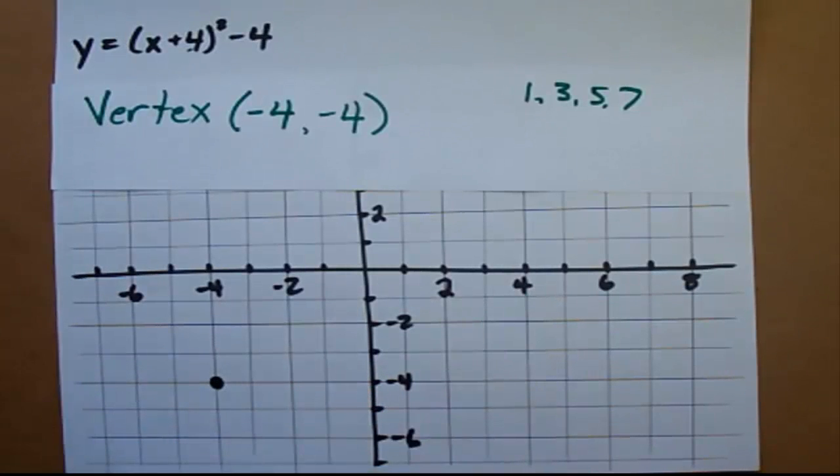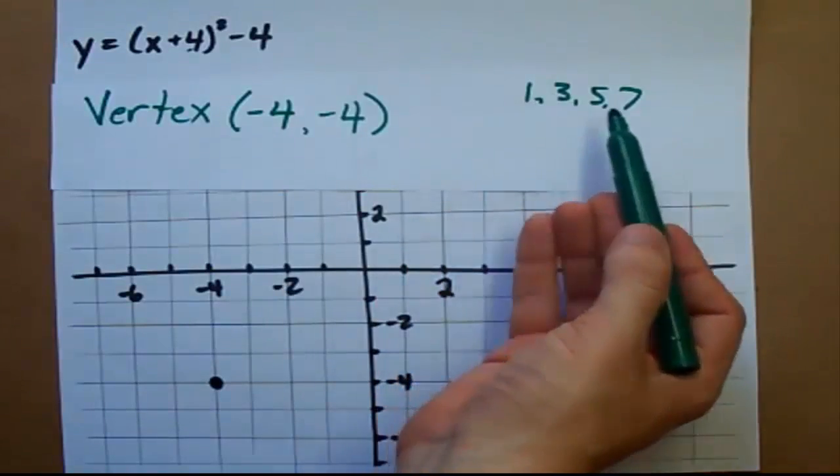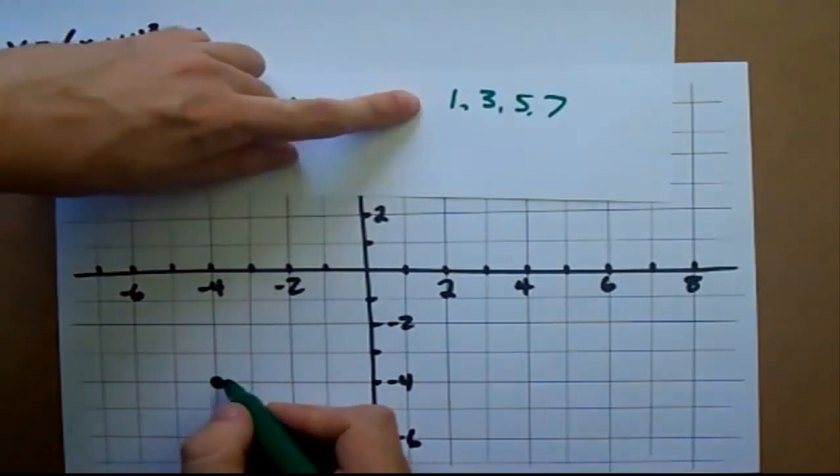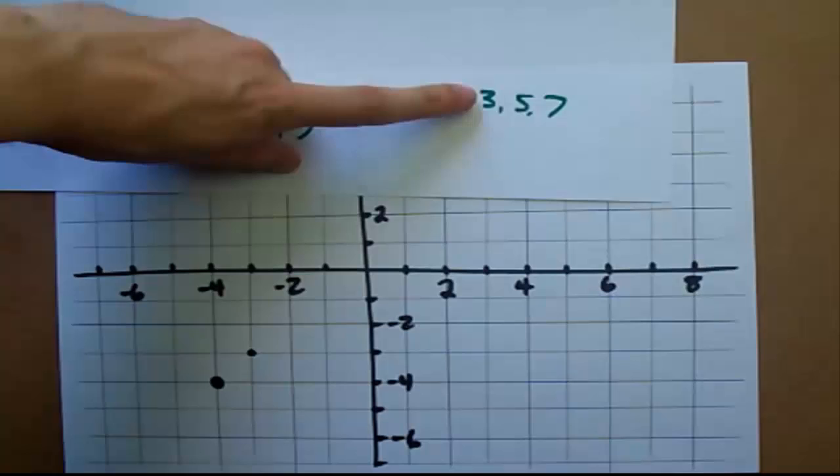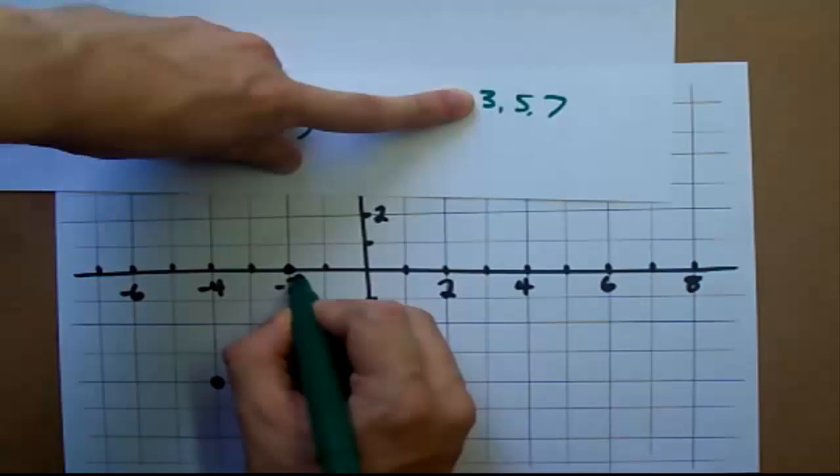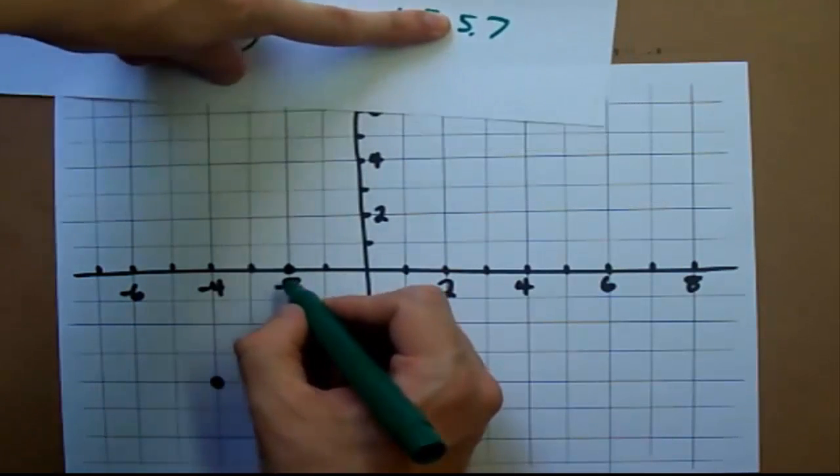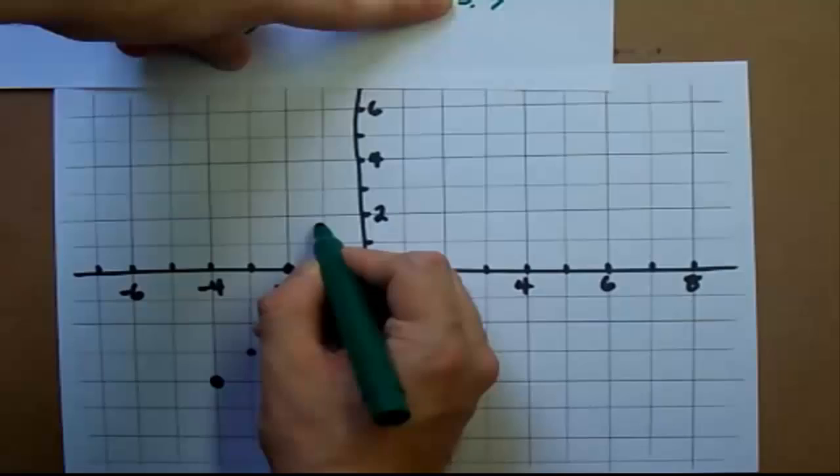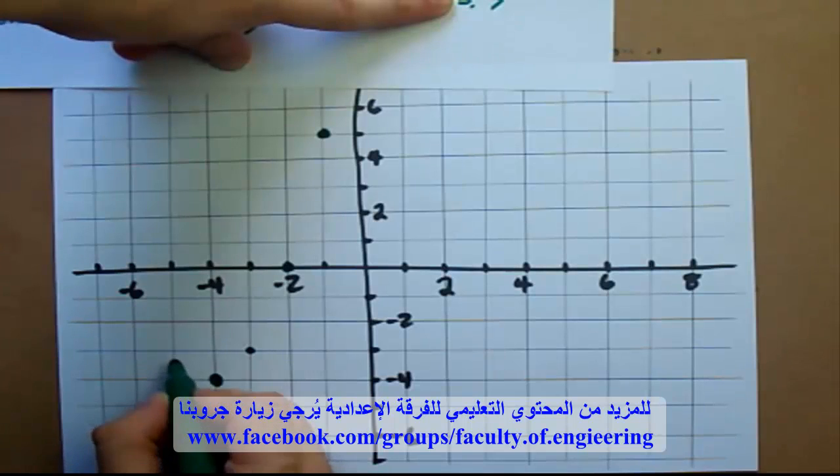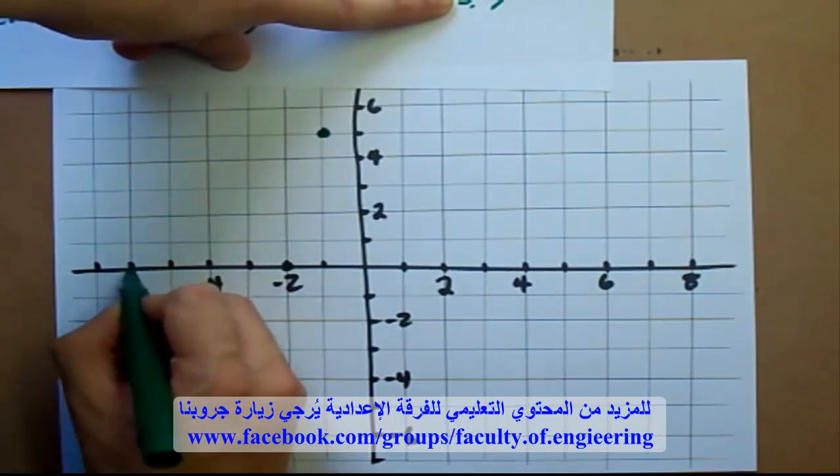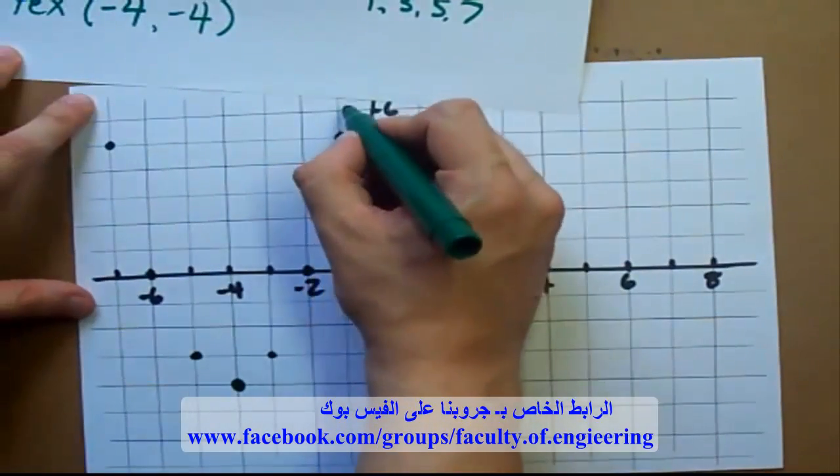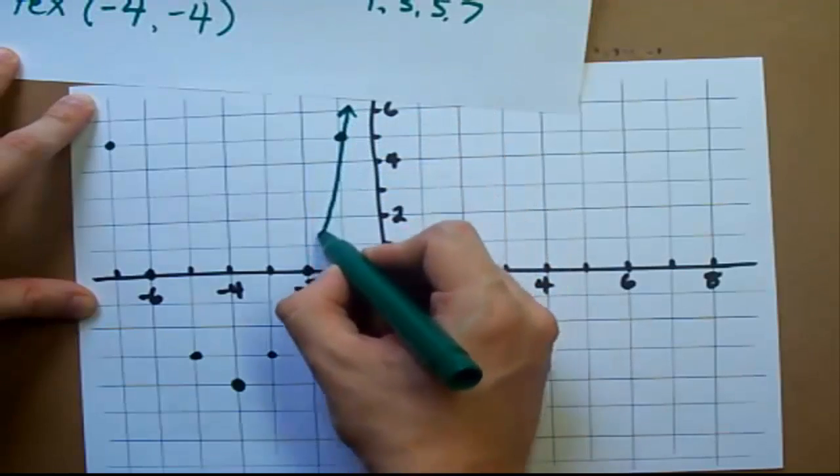There is my vertex, and now the step pattern 1, 3, 5, 7 means you go over 1, up 1, over 1, up 3, over 1, up 5, and you do this in both directions. So you go over 1, up 1, over 1, up 3, over 1, up 5, and then just draw a line through all those points.